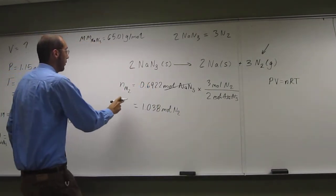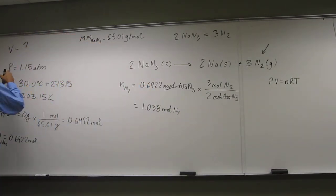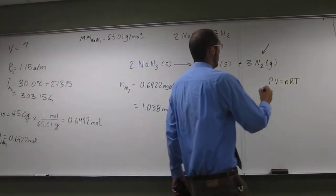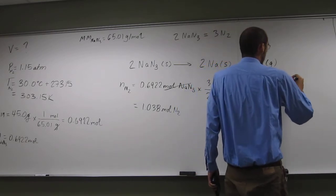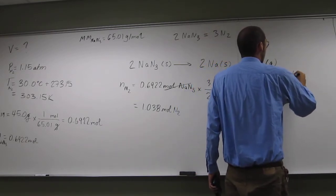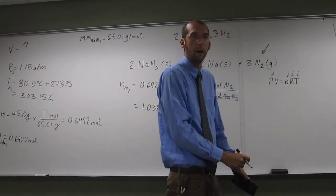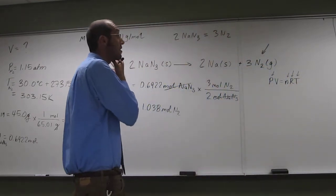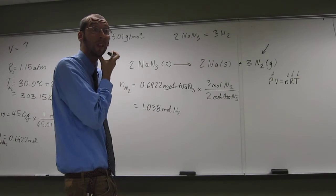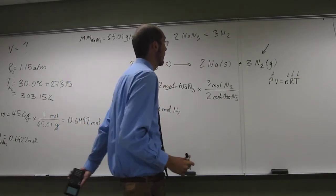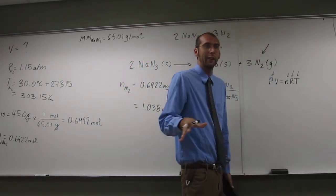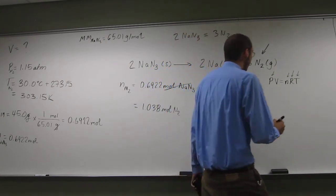So now we know the number of moles of nitrogen, we know the pressure of nitrogen, we know the temperature of nitrogen. So pressure, number of moles, temperature, you know R, that's given to you always. So now we should be able to figure out the volume. And what will happen is everything will cancel out. So are you guys getting this then? Does it make sense?